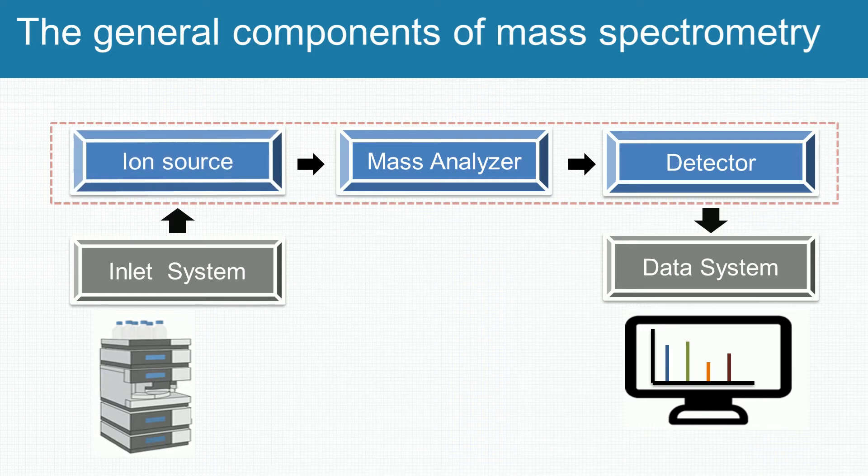In the ion source, a sample is ionized, usually to cations by loss of an electron.